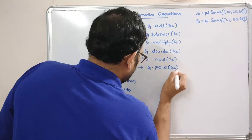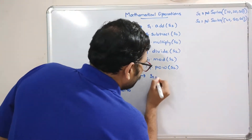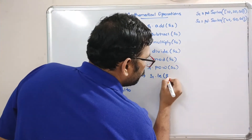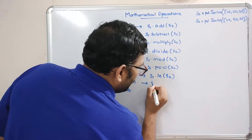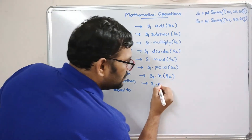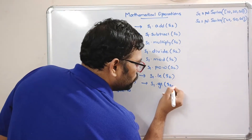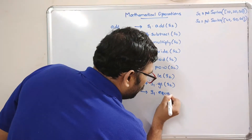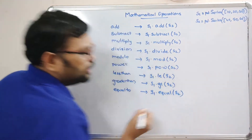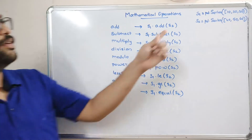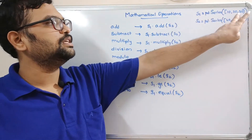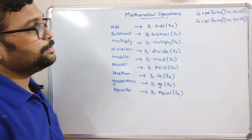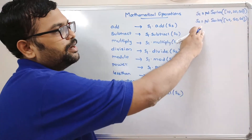For relational operations we have s1.lt(s2) for less than, s1.gt(s2) for greater than, and s1.eq(s2) for equal to. If you apply the addition function on two Series, each element will be added and a new Series will be created.